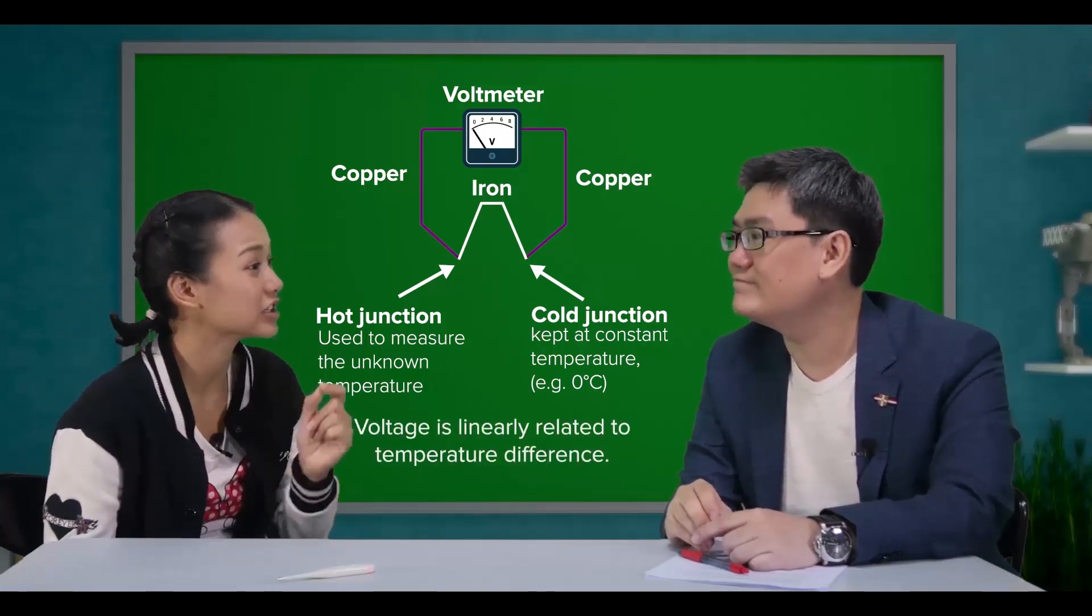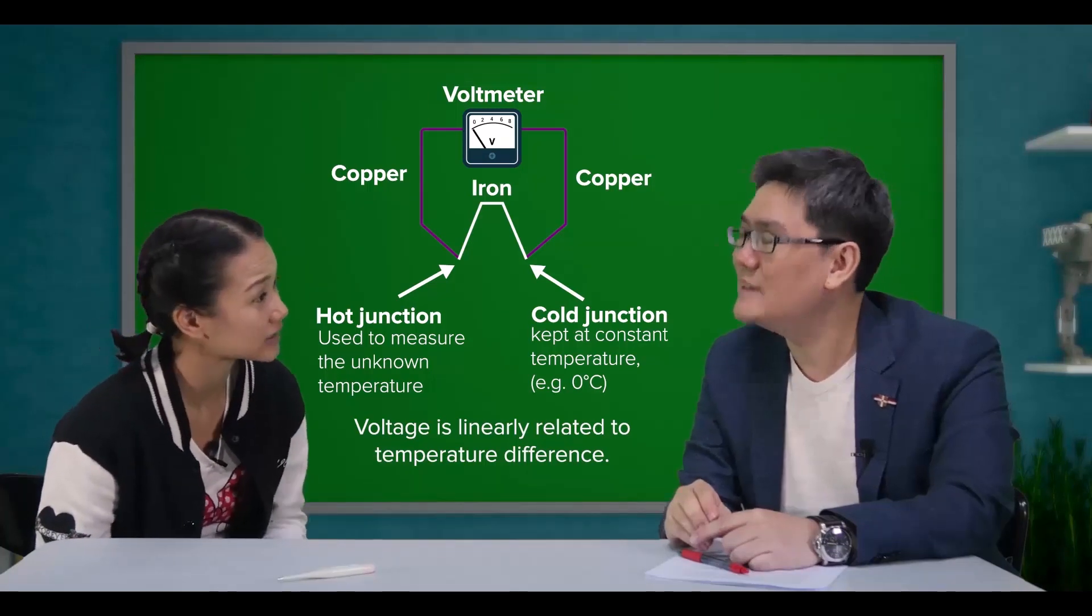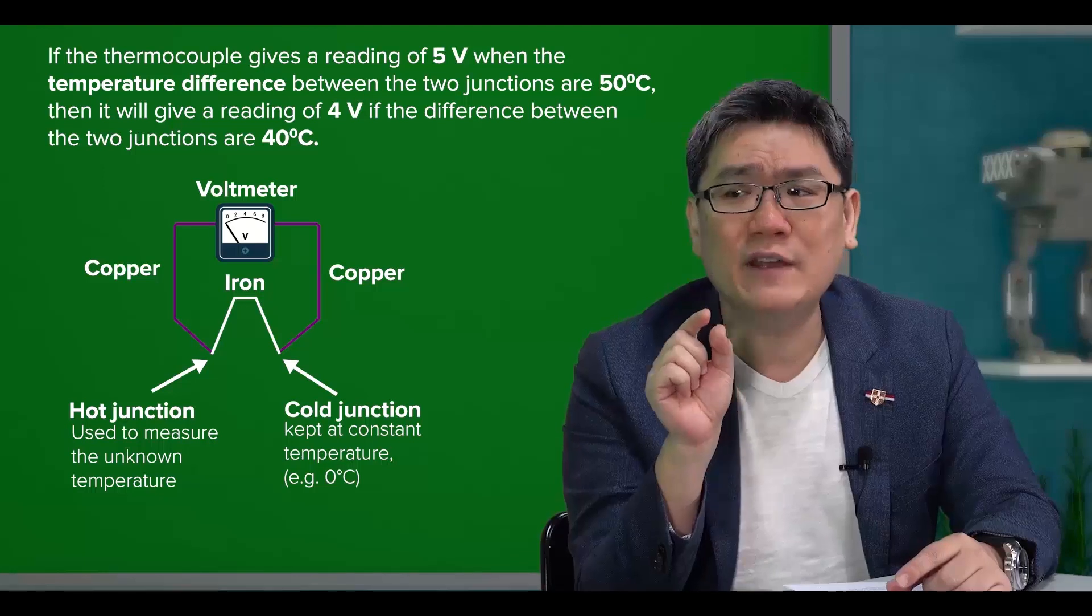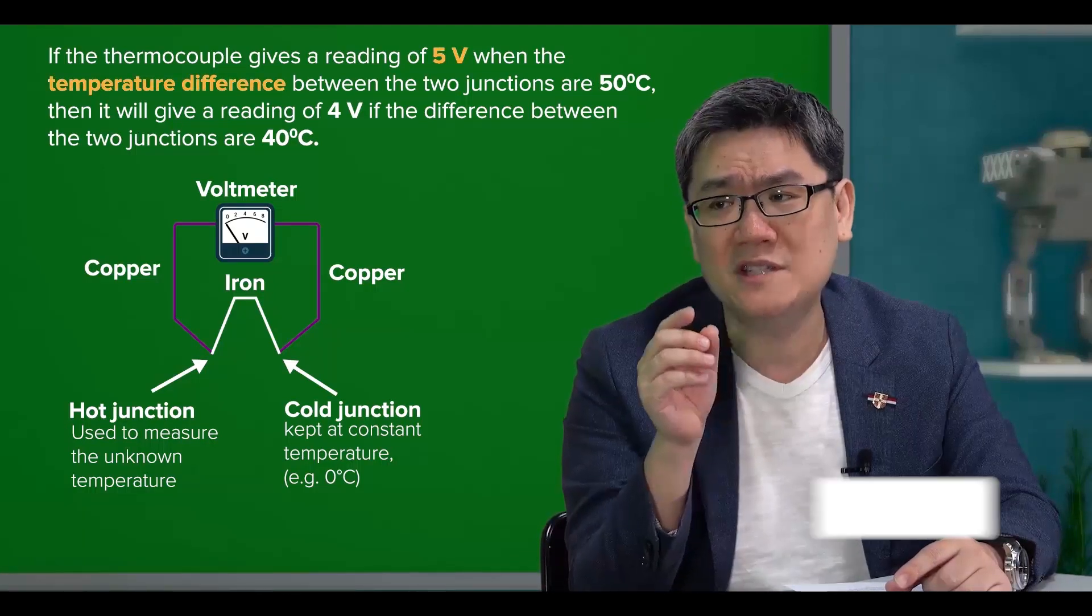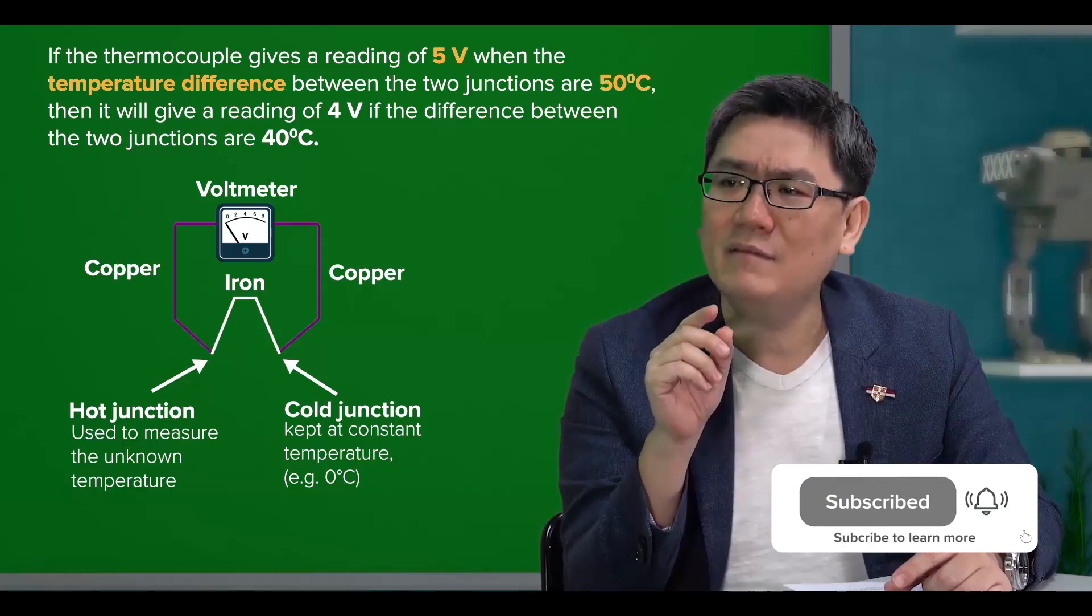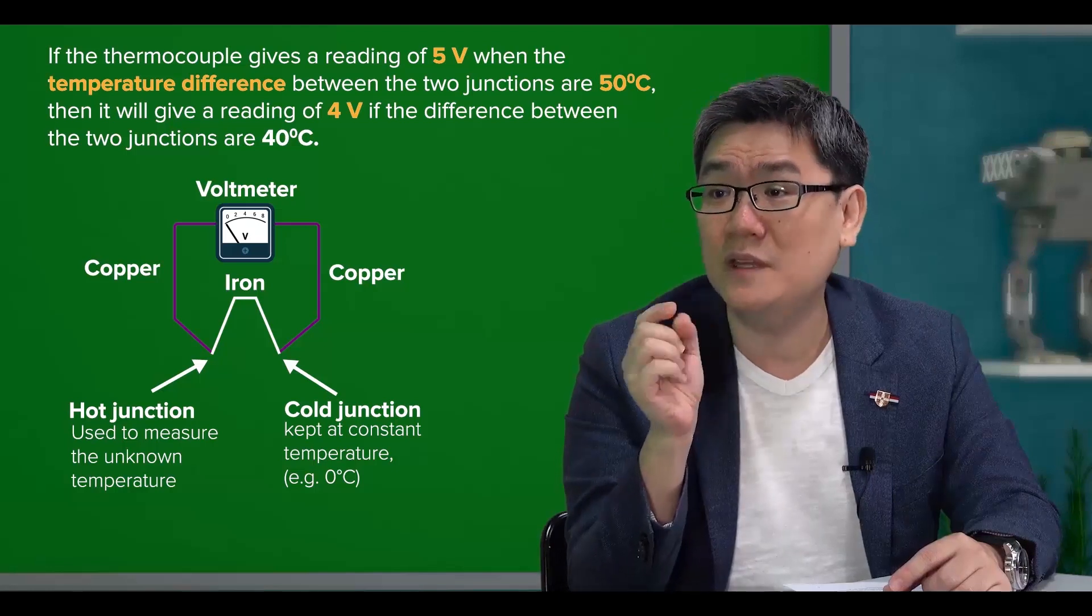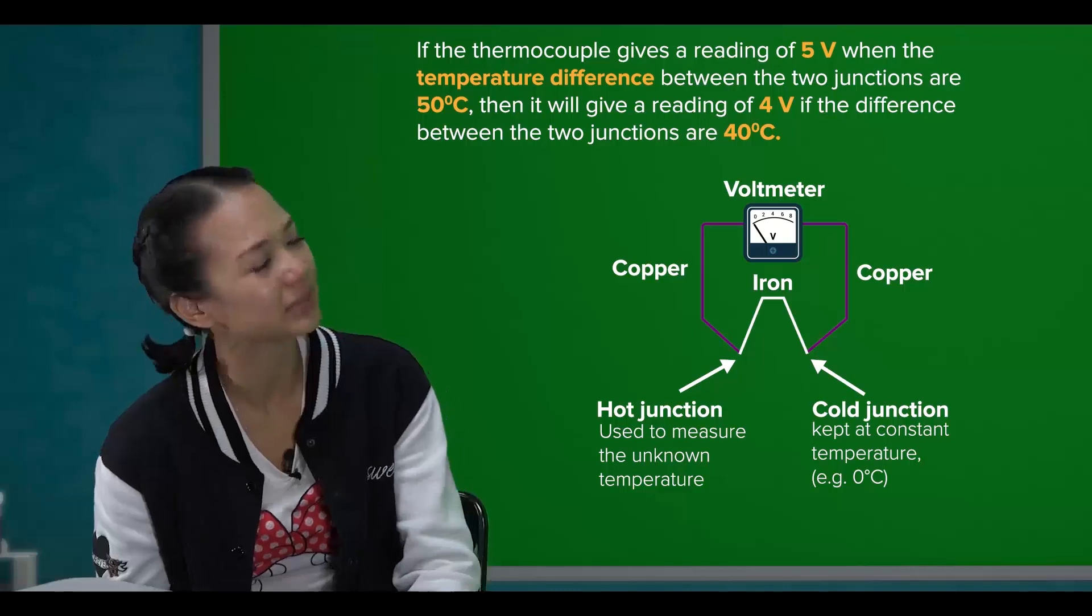And you said that the voltage is assumed to be linearly related to the temperature difference, correct? Yes. So, if the thermocouple gives a reading of 5 volts when the temperature difference between the two junctions are 50 degrees Celsius, then it will give a reading of 4 volts if the difference between the two junctions are 40 degrees Celsius. That's simple enough.